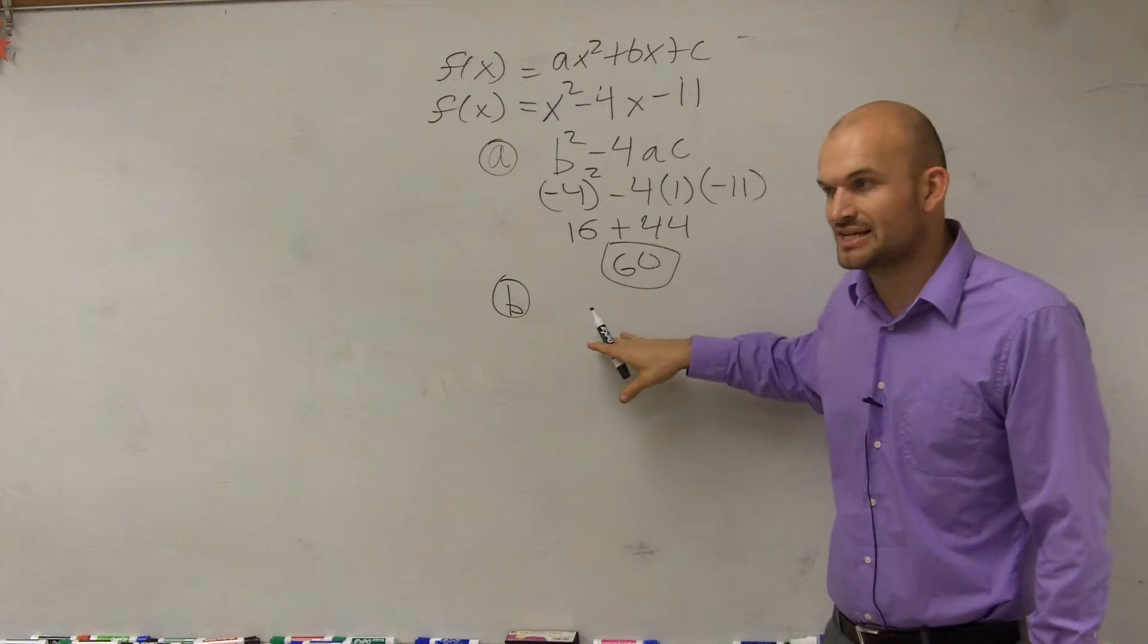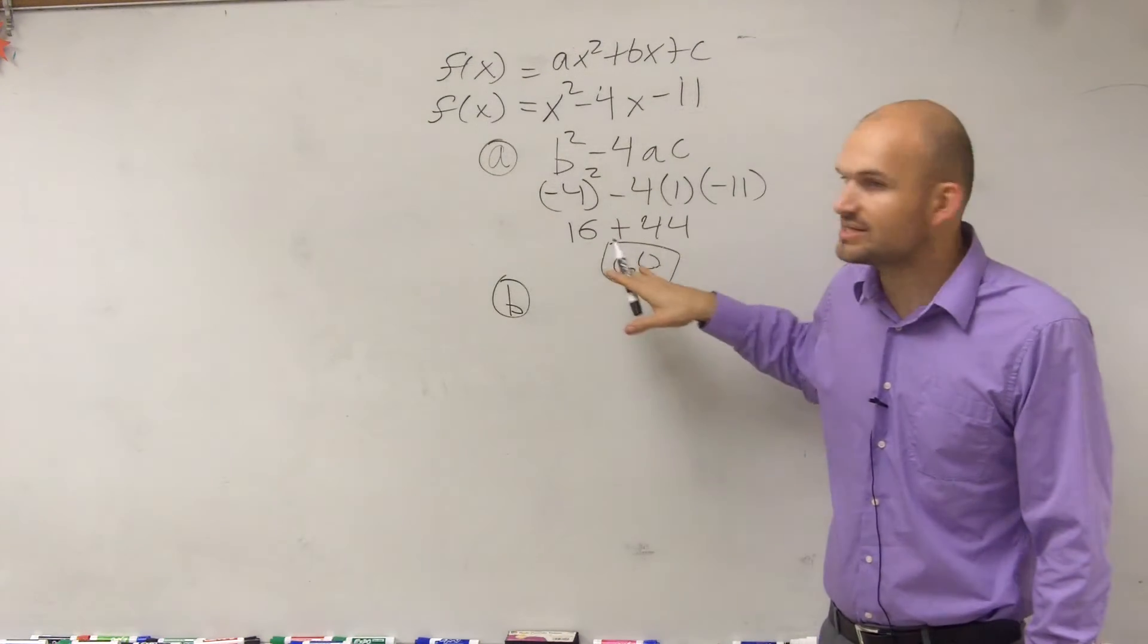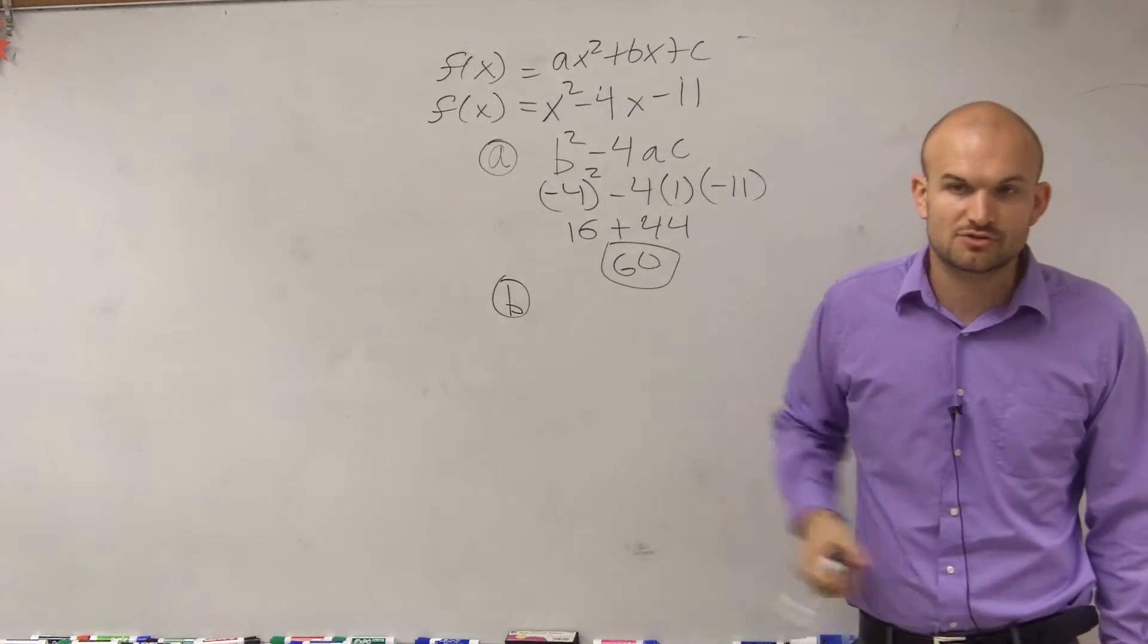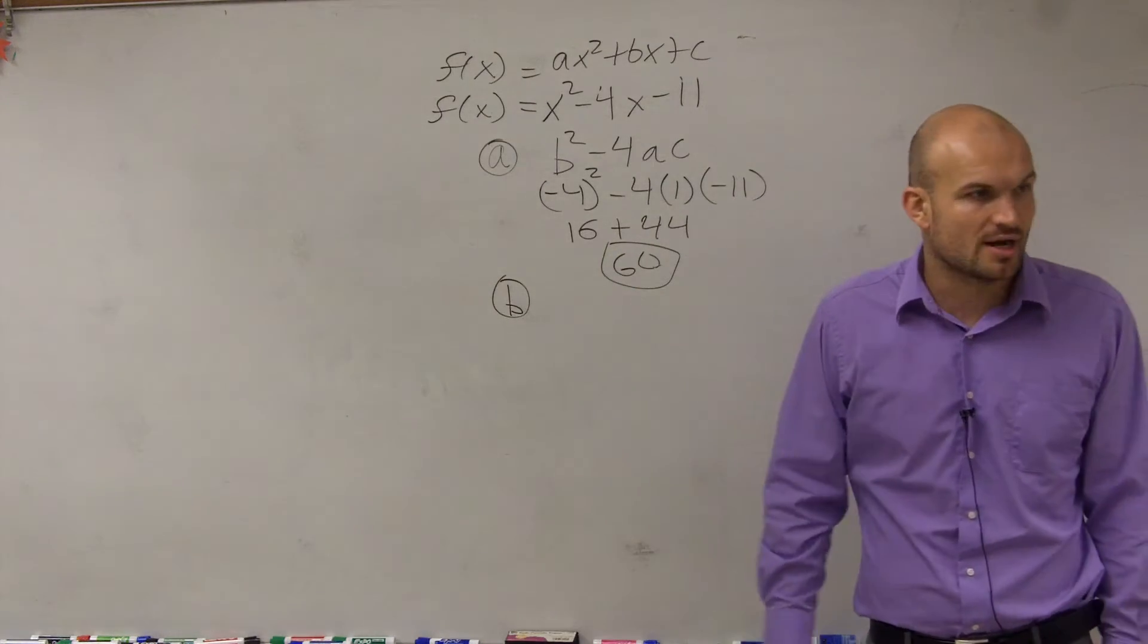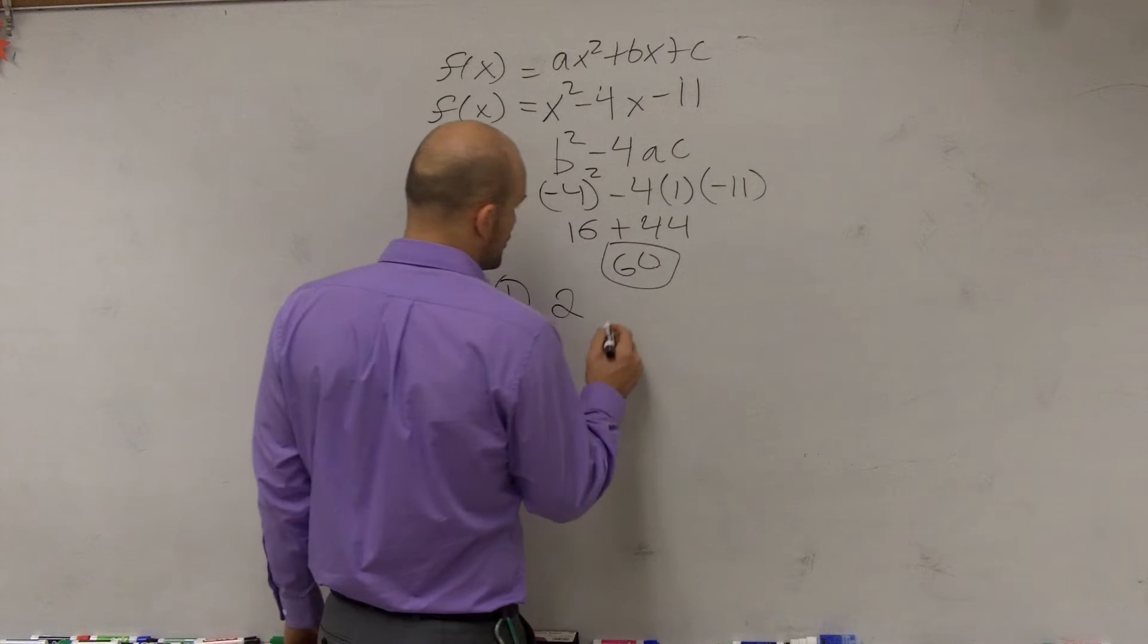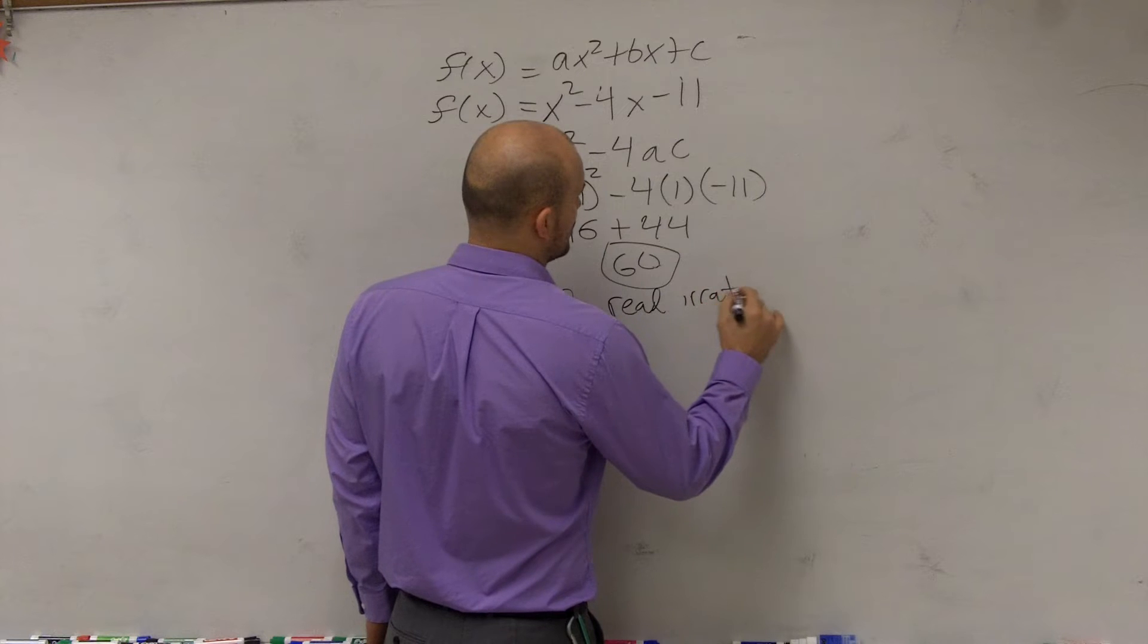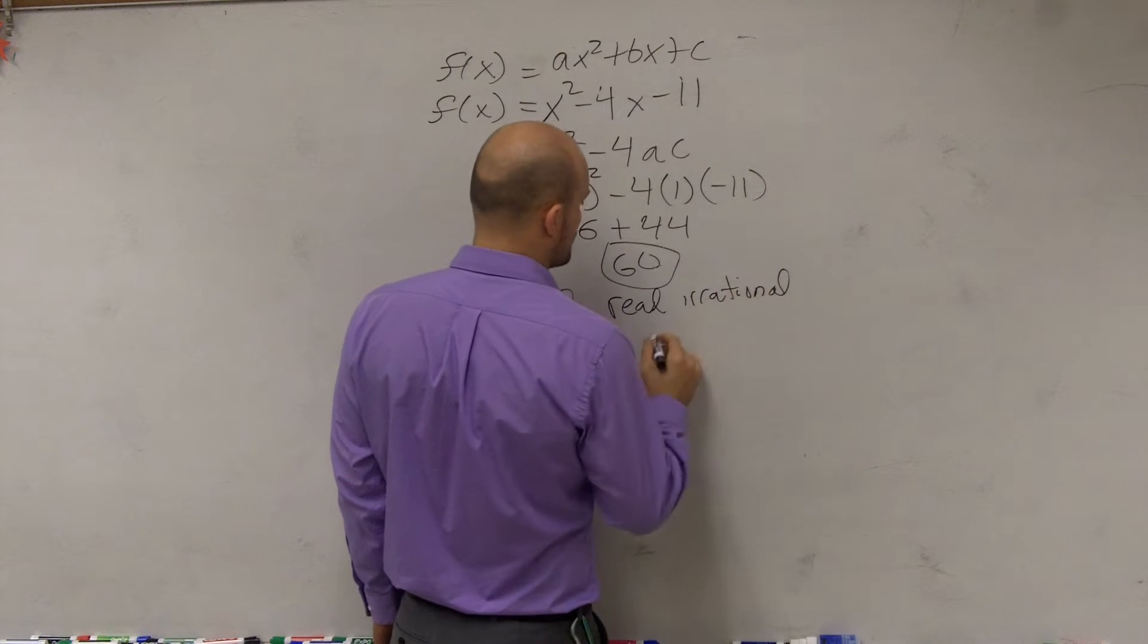Since this is not a square number, it's close to the square numbers of 49 and 64, but it's not a square number. We cannot evenly take the square root of it. So since it's not a square number, our roots are going to be irrational. So you should have two real irrational roots.